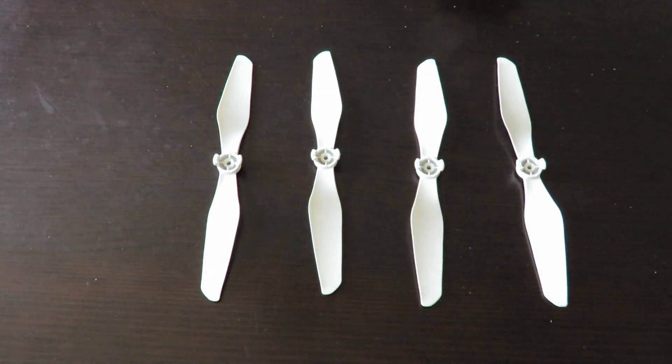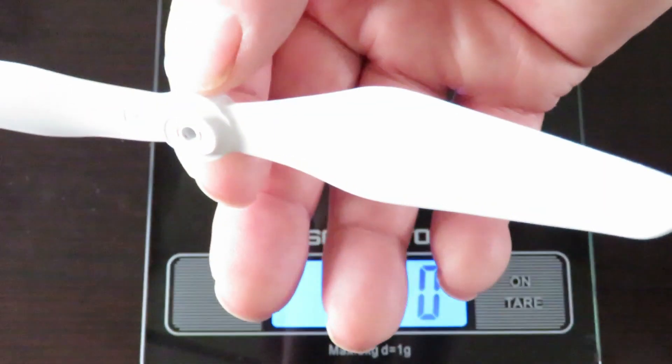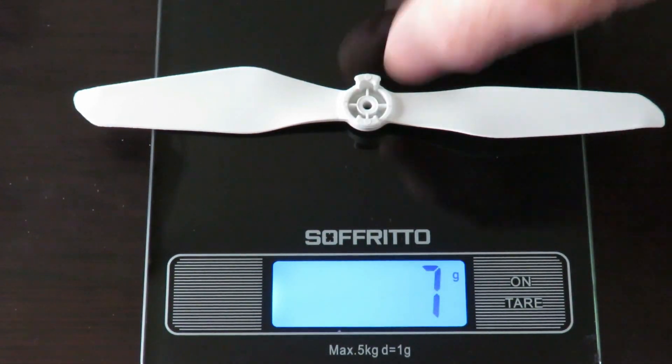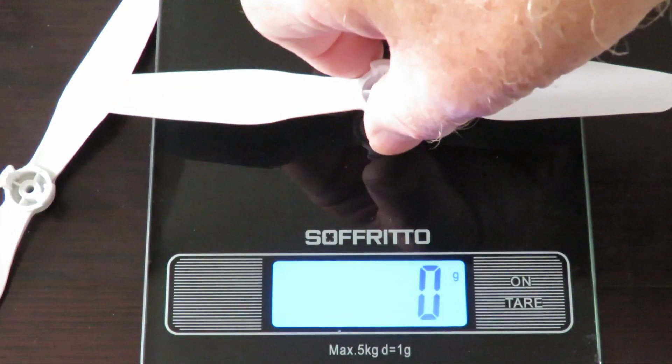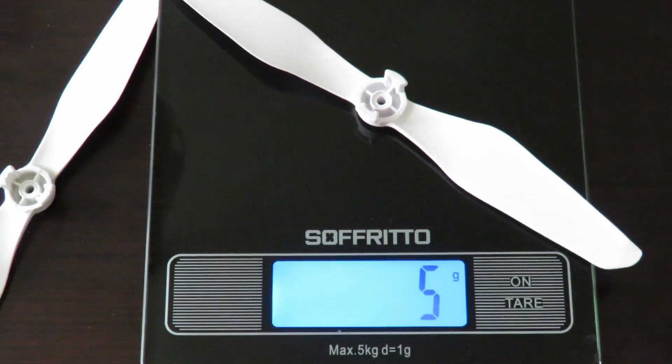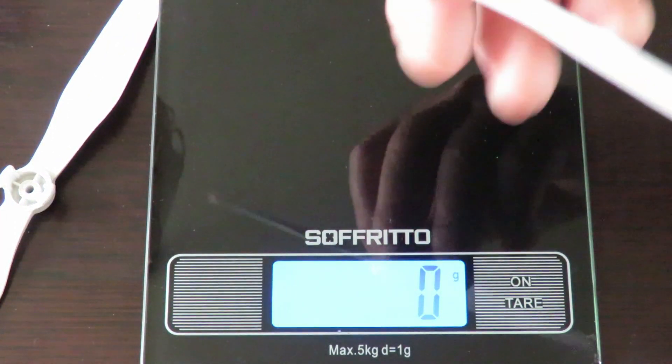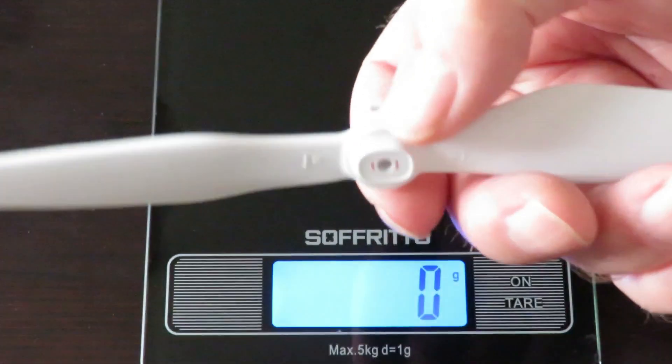I was curious about the thickness of the plastic, so I thought I'd bring out the scales and weigh them. This is one of the replacement propellers at 7 grams. This one is one of the original propellers, so 5 grams. Two grams difference, so my assumption of thicker plastic on the replacement ones is accurate.